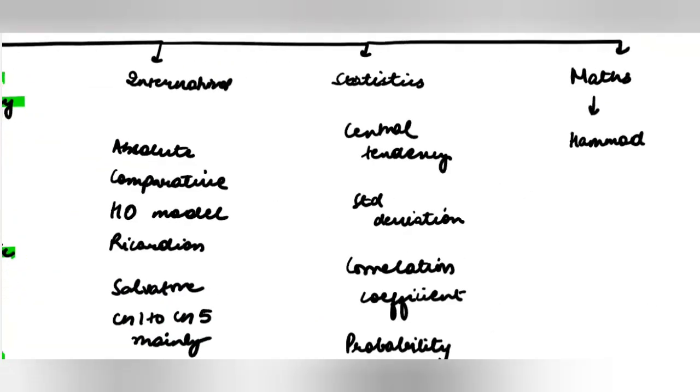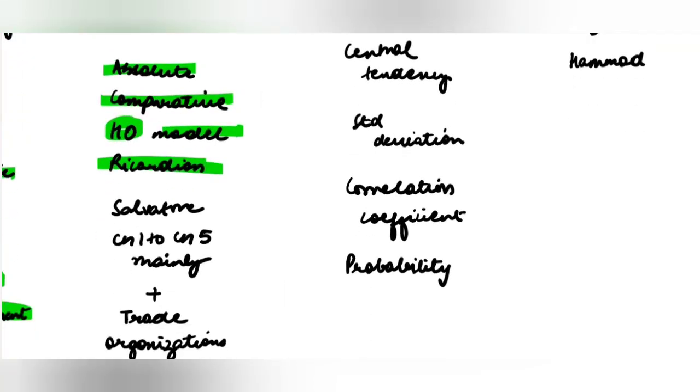Then, very important is your international economics. In international economics, almost all the topics are important. You should know absolute advantage, comparative advantage. You should know Hexerolian model. You should know Ricardian model. So ideally, you have to cover Salvatore completely. Very important book. Chapter 1 to chapter 5, at least. This is the minimum that I am saying.